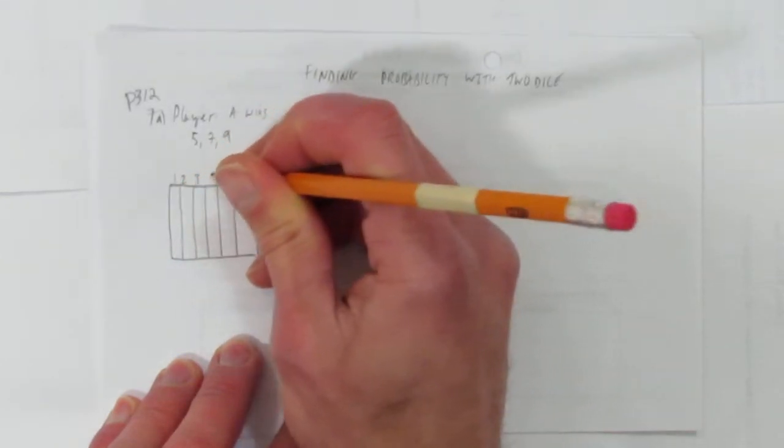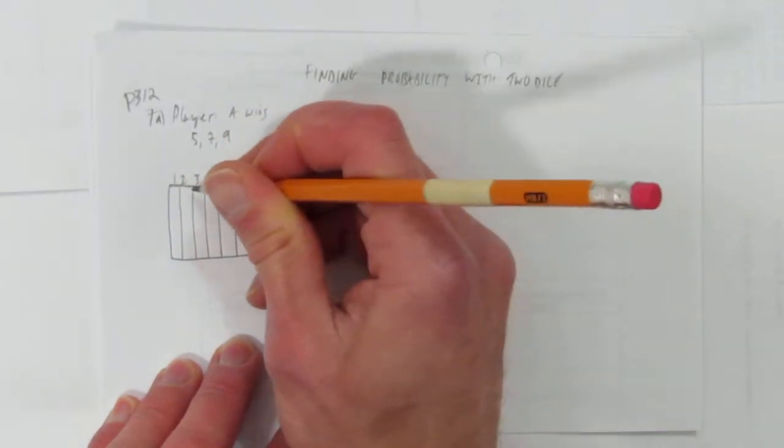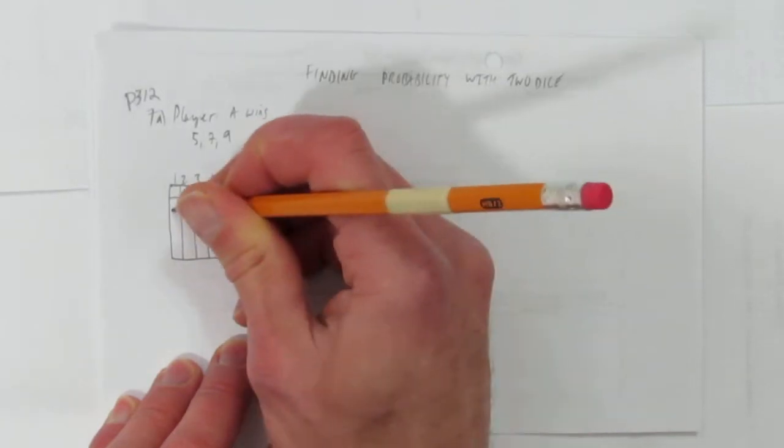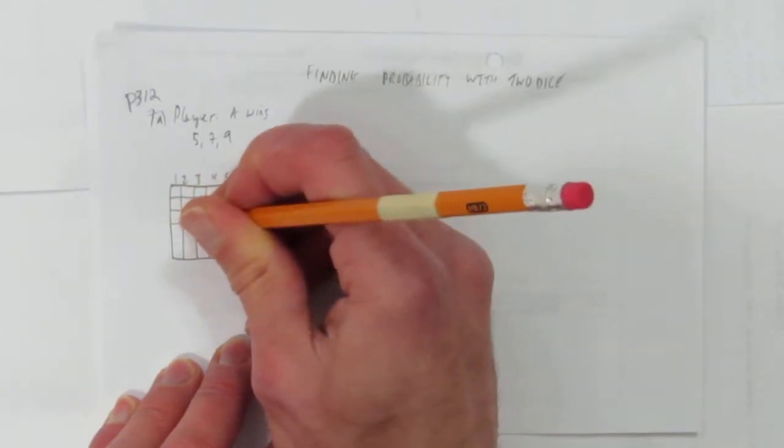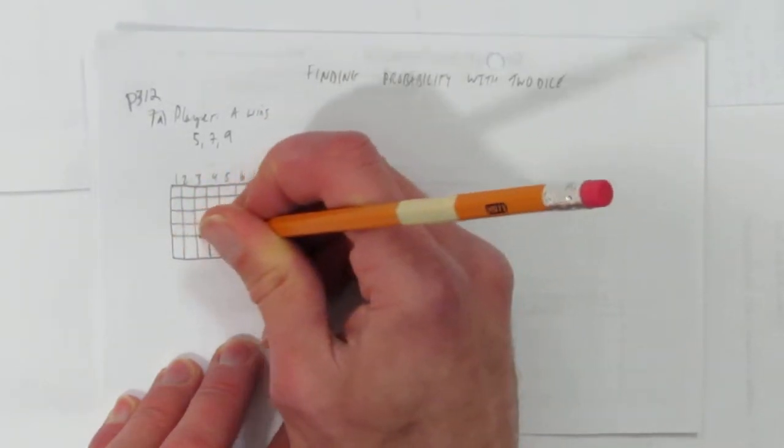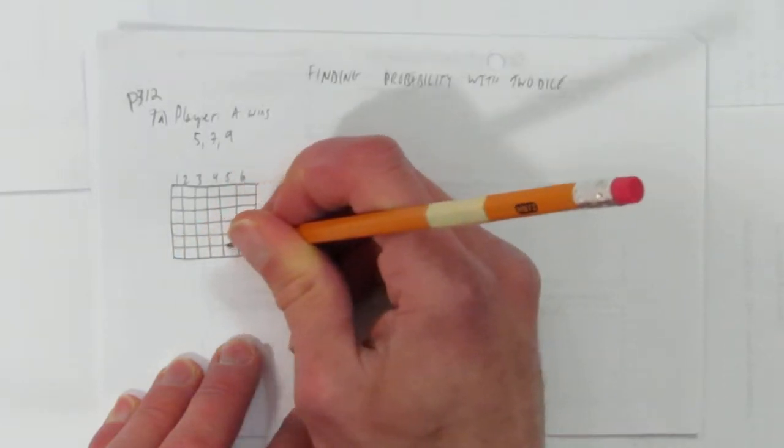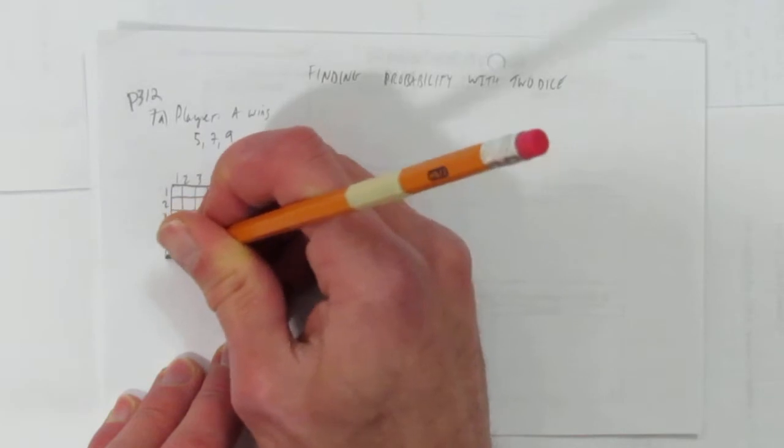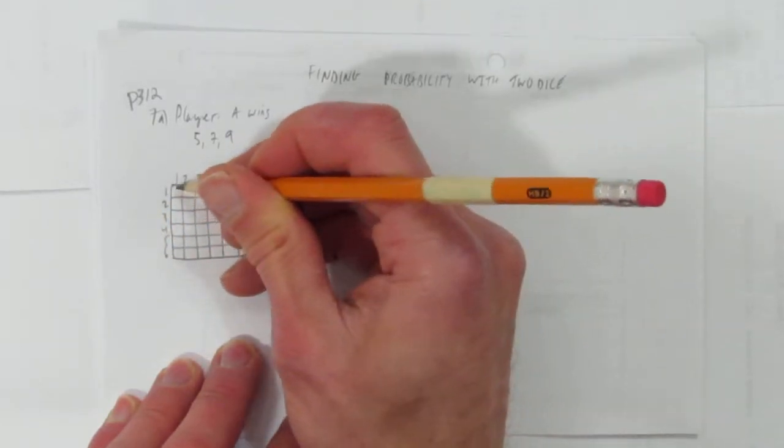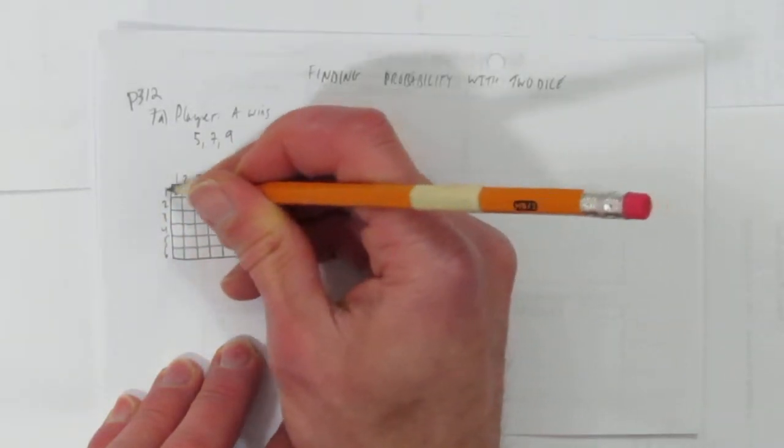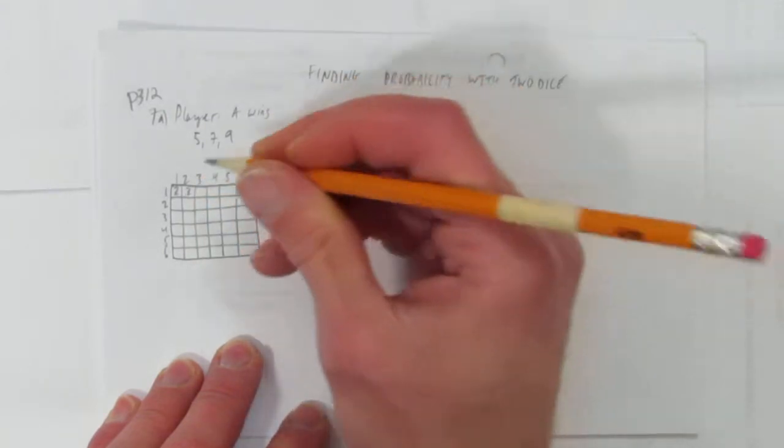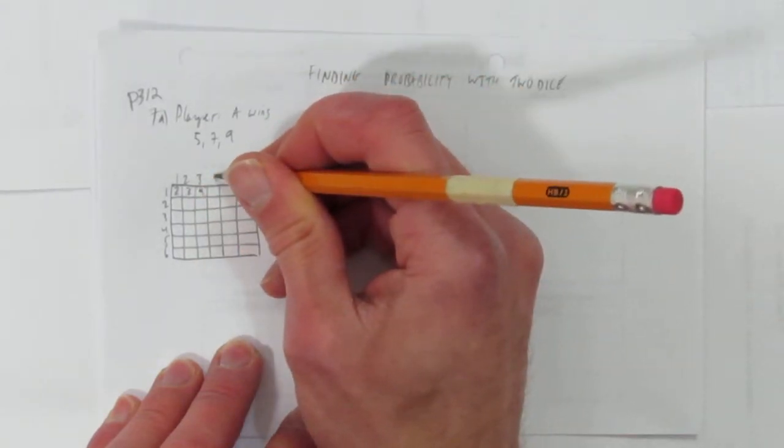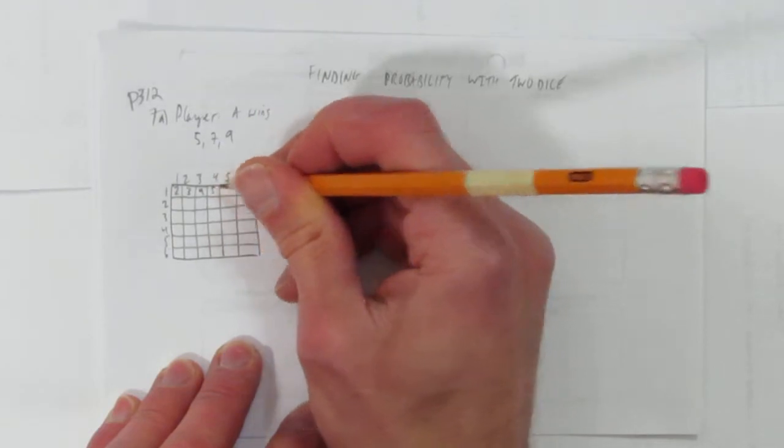So you have a 1, 2, 3, 4, 5, 6. And then here we're going to do 6 rows and 6 columns to represent the 36 possibilities with two dice. So you could roll a 1 and a 1. That would give you a sum of 2. A 1 and a 2 would give you a sum of 3. And so on. Each of these is just me adding the column and the row number.